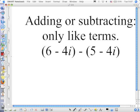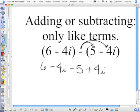When you're adding or subtracting, it's the same thing as if this was 6 minus 4x minus 5 minus 4x. What would be the first thing you do? Not FOIL. This is subtraction. I want to make sure I distribute this minus sign to everything in that second group because we're subtracting those terms. So it's 6 minus 4i minus 5 plus 4i. Then I find my terms that are alike, and I combine them.